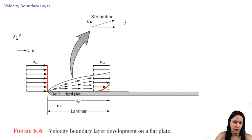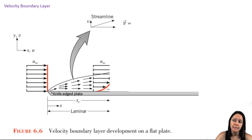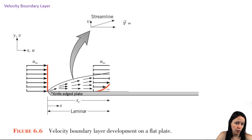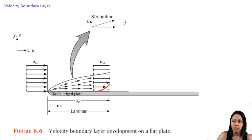Let's look at our velocity field. You see that it's a vector, which means it has direction and magnitude. You see that the free stream velocity, u-infinity, comes in parallel to our flat-edged plate. If we define the x-direction as being parallel to the x-axis, we see that u-infinity is in the x-direction.